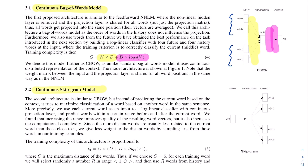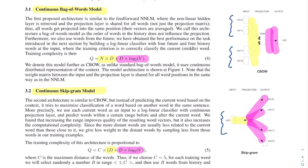The second architecture is the continuous skip-gram model. Instead of using surrounding words to predict the center word, it uses the center word to predict the surrounding words. The cost involves the projection and output layers, multiplied C times for each context word log-linear classifier. In the second paper, the authors deep-dive into skip-gram and discuss further optimizations beyond the hierarchical softmax used here.